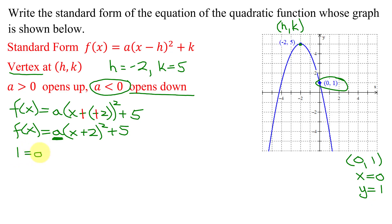So I have 1 equals a times, x is 0, plus 2, all squared, plus 5.